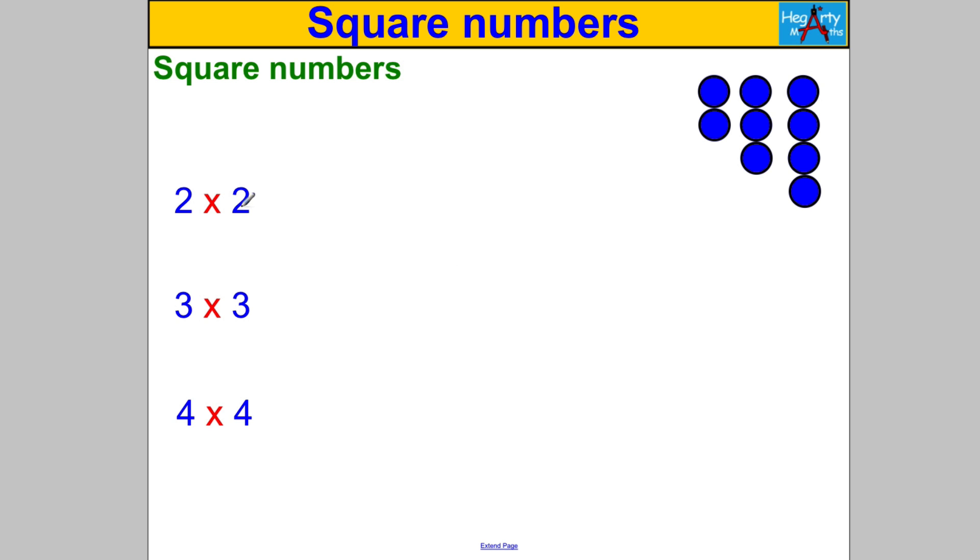Well I'd like you to consider the following: 2 multiplied by 2 which is 4, 3 multiplied by 3 which is 9, 4 multiplied by 4 which is 16 from our times tables.